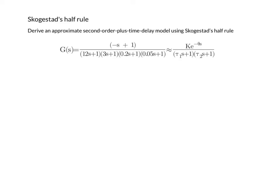Skogestad's half rule is a systematic way of reducing the order of a transfer function. I'll explain how to apply this method using this example.